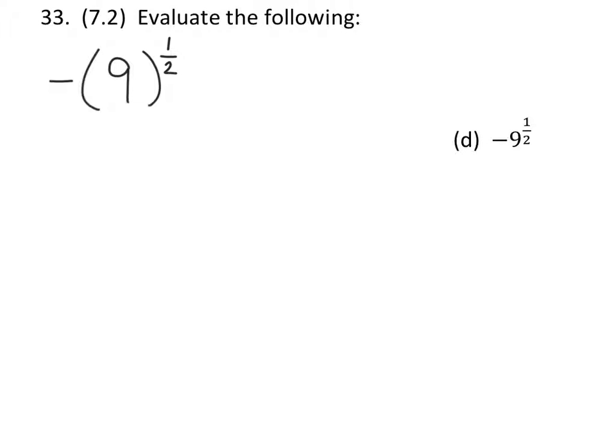What this means really is that we have a negative 1 and we're going to multiply this by 9 to the power of 1 half. And at this point it doesn't matter where we put the parentheses, just as long as we understand that this 1 half, the exponent, does not apply to this negative.